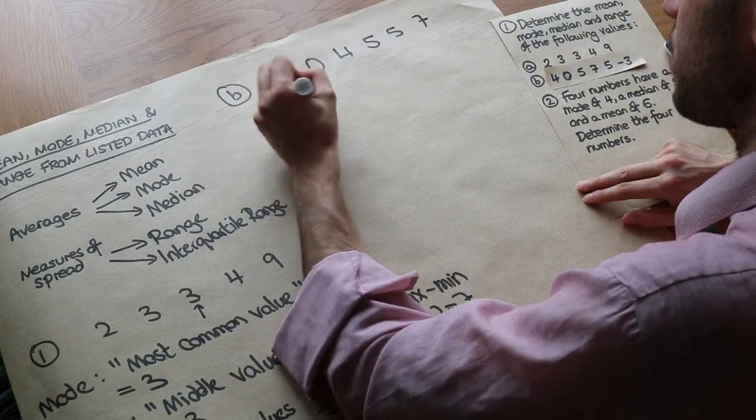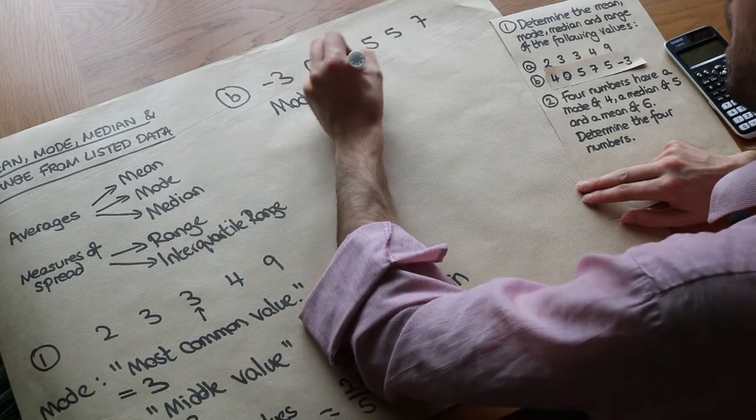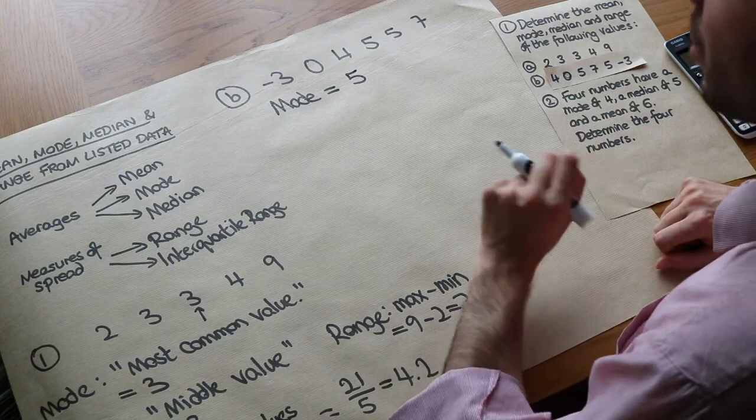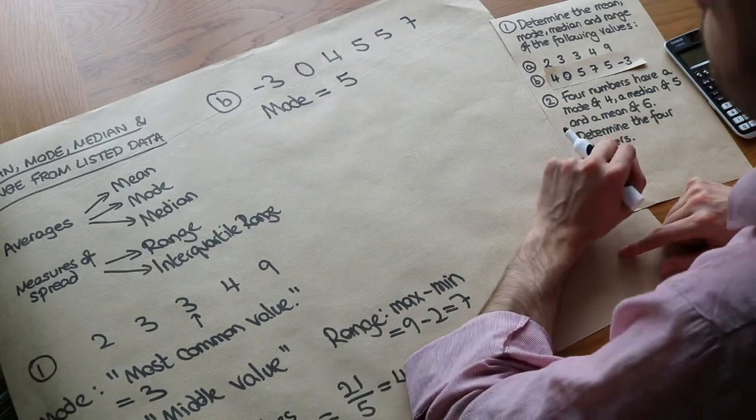So now we can find our values from before. Let's find the mode first. That's probably the easiest one. What's the most common value? Well it's 5. And by the way, it's possible for data not to have a mode. If there's no most common value then there is no mode.